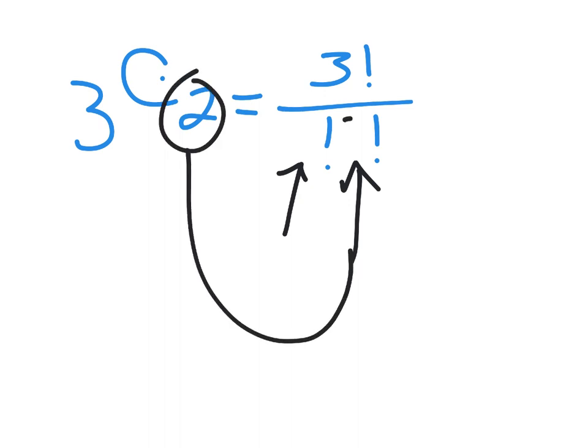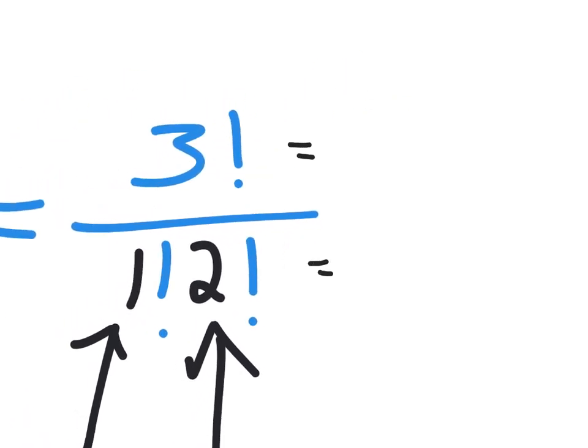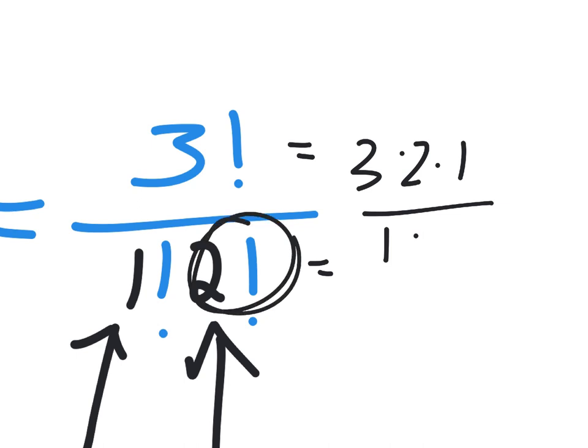You take this and you put it as an extra one on the bottom. And then three minus two is one factorial. So there's a one factorial and a two factorial. Three factorial really means three times two times one. One factorial is one. Times two factorial, which is two times one. So the whole bottom is equal to two. So now this all cancels and the answer is three. Raise your hand if you had three. I'm going to give you a word problem now.